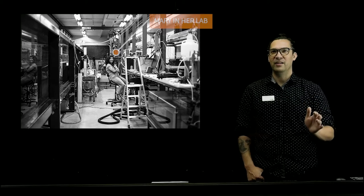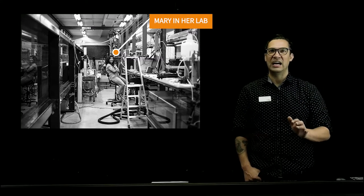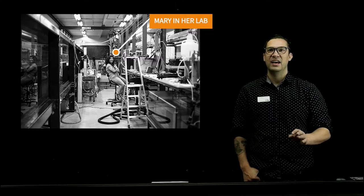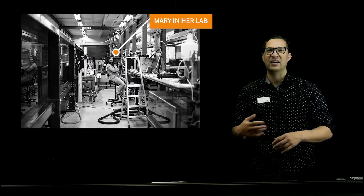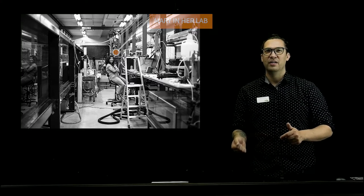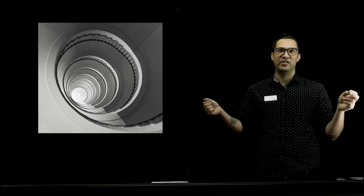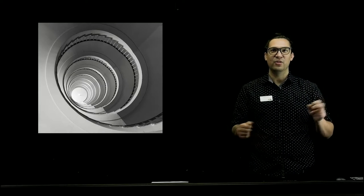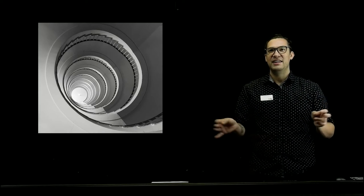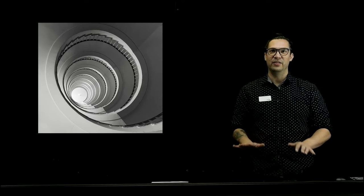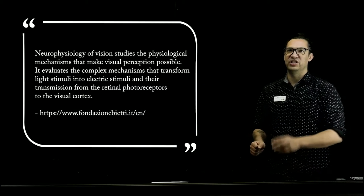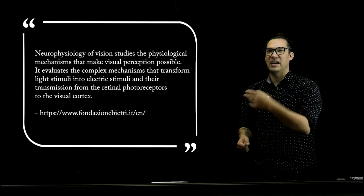The thought experiment given by Jackson goes as follows. Imagine a hypothetical scientist, Mary, who's been locked away her whole life in a black and white room, and gets all her information through a black and white television. Her skin is painted black and white, there are black and white contact lenses in her eyes, and Mary, her whole life, never experiences any other colors other than black and white.